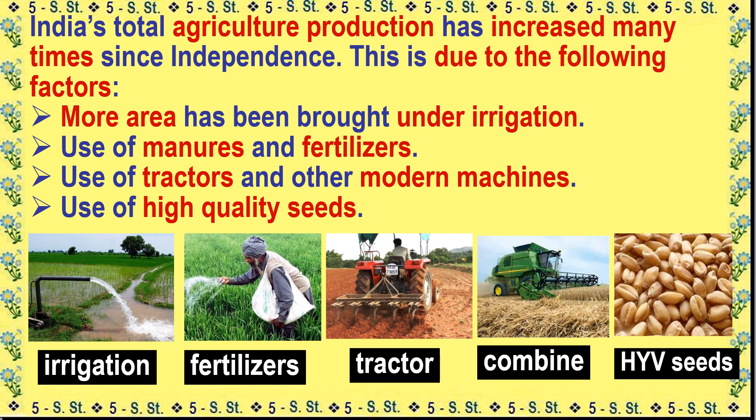India's total agriculture production has increased many times since independence. This is due to the following factors: more area has been brought under irrigation, use of manures and fertilizers, use of tractors and other modern machines, and use of high-quality seeds.